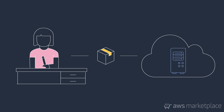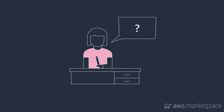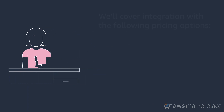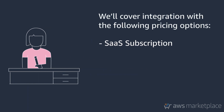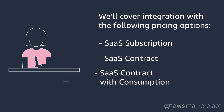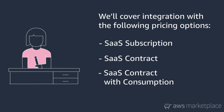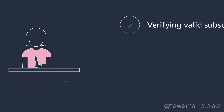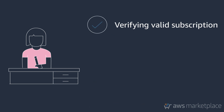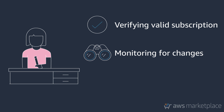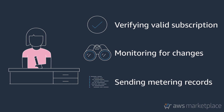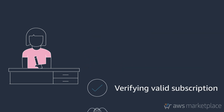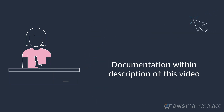The steps required to integrate with Marketplace depend on your product's pricing model. In this video, we will be covering SaaS Subscription, SaaS Contracts, and SaaS Contracts with Consumption. For each one, we will introduce the requirements for verifying valid subscriptions, monitoring for subscription changes, and sending metered records, if applicable. For information about each requirement, visit the documentation links included in the video description.